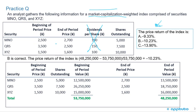We have the beginning period price and the ending period price. If it were a price weighted index, we'd simply add up the prices at the beginning, add up the prices at the end, and compute ending divided by beginning minus 1 times 100. But this is market capitalization weighted. So we need shares outstanding times price to get market capitalization for each security at the beginning of the period.